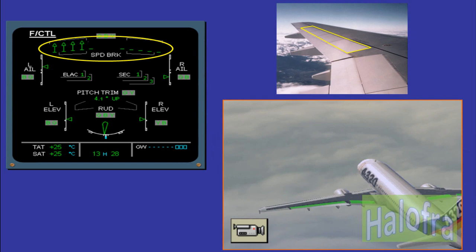Roll spoilers: to complement the ailerons' action, the roll spoilers are deployed automatically by the computers on the same side as the aileron which is deflected upward. They remain retracted on the other wing, proportionally to aileron deflection. The computers are able to mix the speed brakes function with the roll spoilers. Roll control uses the four outer surfaces — on the video, look at the left spoilers as they deploy, then at the right ones as the wings are leveled.